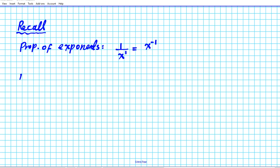There are also some differentiation rules that we should have mastered that we need to know for this problem. The first one is the power rule. If you differentiate x to the n, then x to the n prime is n times x to the n minus 1.